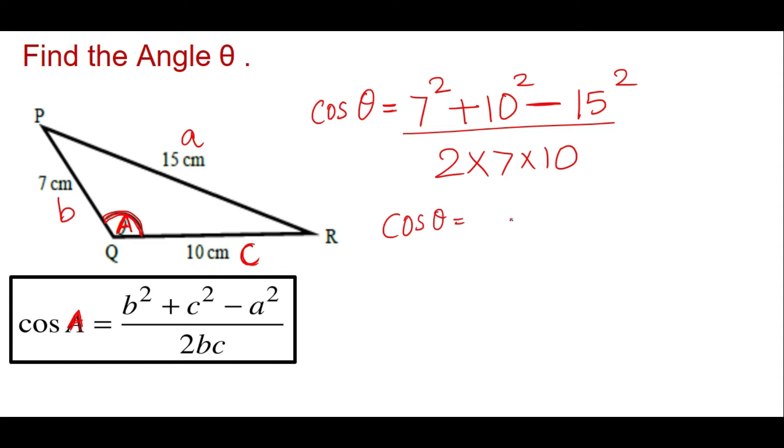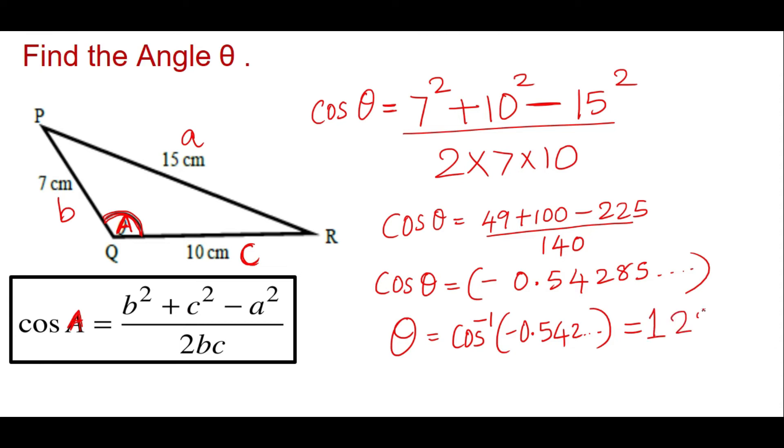So you have cos theta equals 49 plus 100 minus 225 over 140. You can use your calculator to find the value for cos theta which is cos theta equals negative 0.54285, and you can find theta by taking the cos inverse of your answer which is going to be 122.878. Give your answer to three significant figures which is theta equals 123 degrees. This answer is to three significant figures.